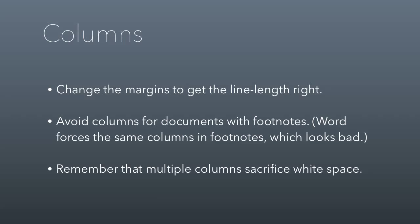You can use columns in 8.5 by 11 pages — in some cases they can look really good, but they're a little tricky. Make sure you change the margins to get the right line length. A lot of people make their columns too narrow, getting only three or four words per line. Make sure you get an appropriate line length of 45 to 90 characters in whatever column size you use. Avoid columns for documents that have footnotes — Word forces footnotes into multiple columns, which looks bad and is confusing. Finally, remember that multiple columns sacrifice white space, which is a trade-off: you can cram more text onto a page, but your reader gets less white space.